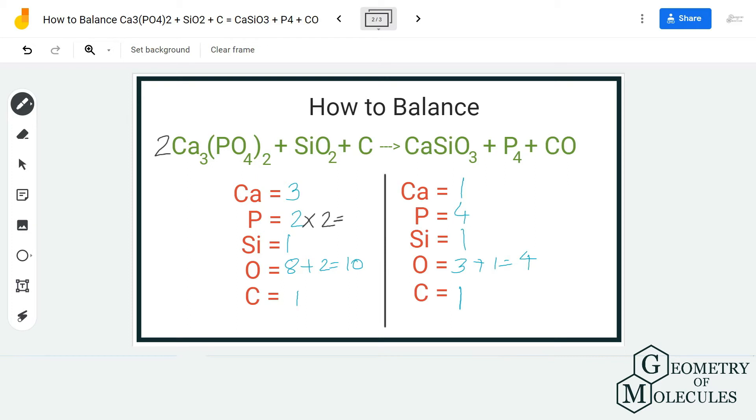Now when you add two over here it changes the number of atoms of calcium and oxygen as well. So we are going to update our calcium atoms, phosphorus atoms, and oxygen atoms for this side. Initially we had three calcium atoms, but now that we have multiplied by two, we have six calcium atoms, four phosphorus atoms.